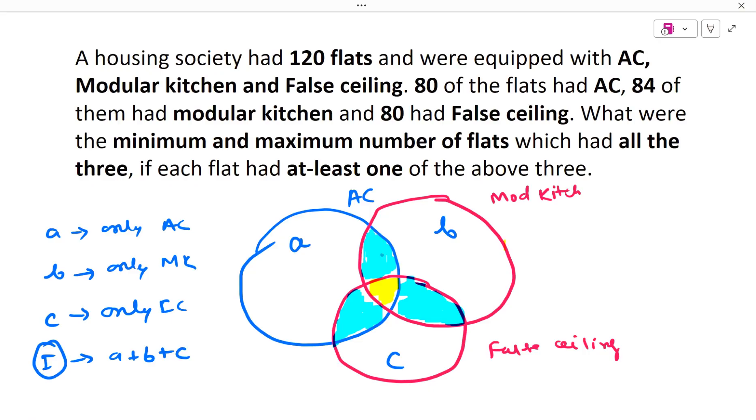Similarly, let us assume that these areas which have exactly two like AC plus modular kitchen only, this blue highlighted one, and E is the AC and false ceiling's common area, exactly two. And also the modular kitchen and false ceiling, we assume as F. So my area where we are having exactly two is D, D is for AC plus MK only, and this is AC plus false ceiling only, and this is modular kitchen plus false ceiling only, exactly two parts.